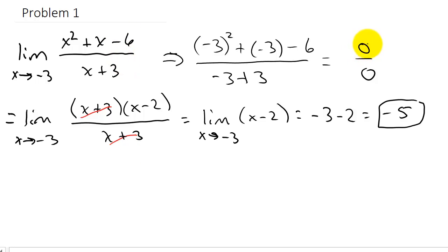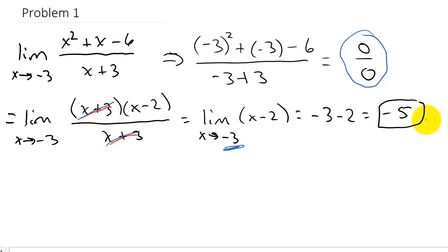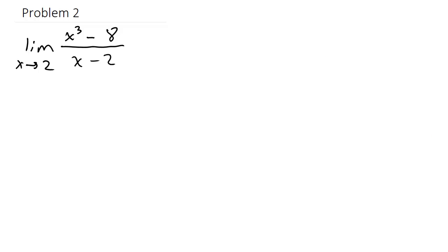Remember: if you plug x in and end up with 0 over 0, then we have to try something else. In this case we factored the numerator, which allowed us to cancel the x plus 3's, and then we could plug in negative 3 for x and get our limit of negative 5.